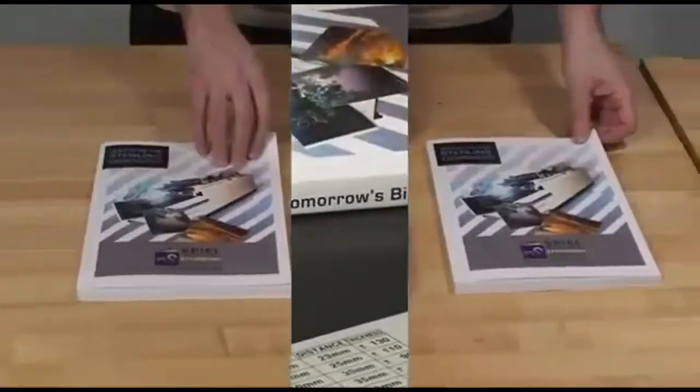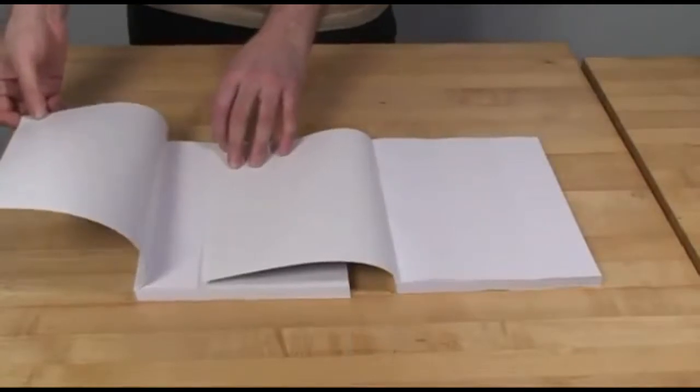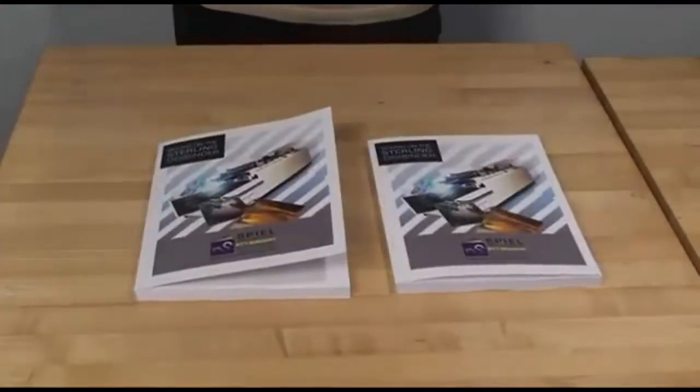Here are the results. As you can see, the DigiBinder can bind books with side gluing without creasing.